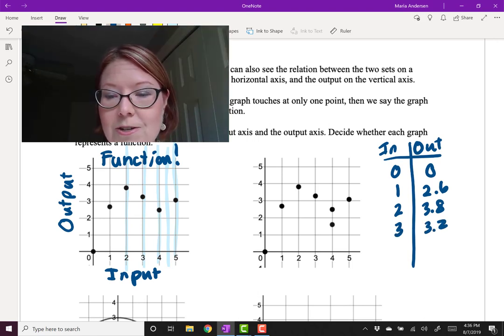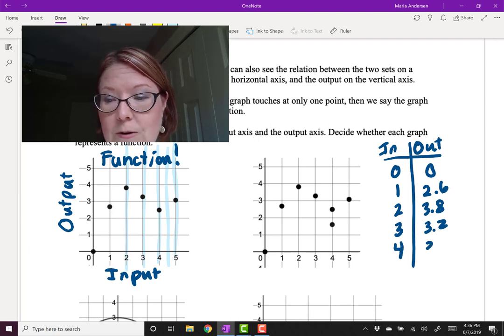this is where we start to run into problems. I have an output value of 2.6 and I have an output value of 1.5. And this is the thing that's going to cause a problem with it being a function.